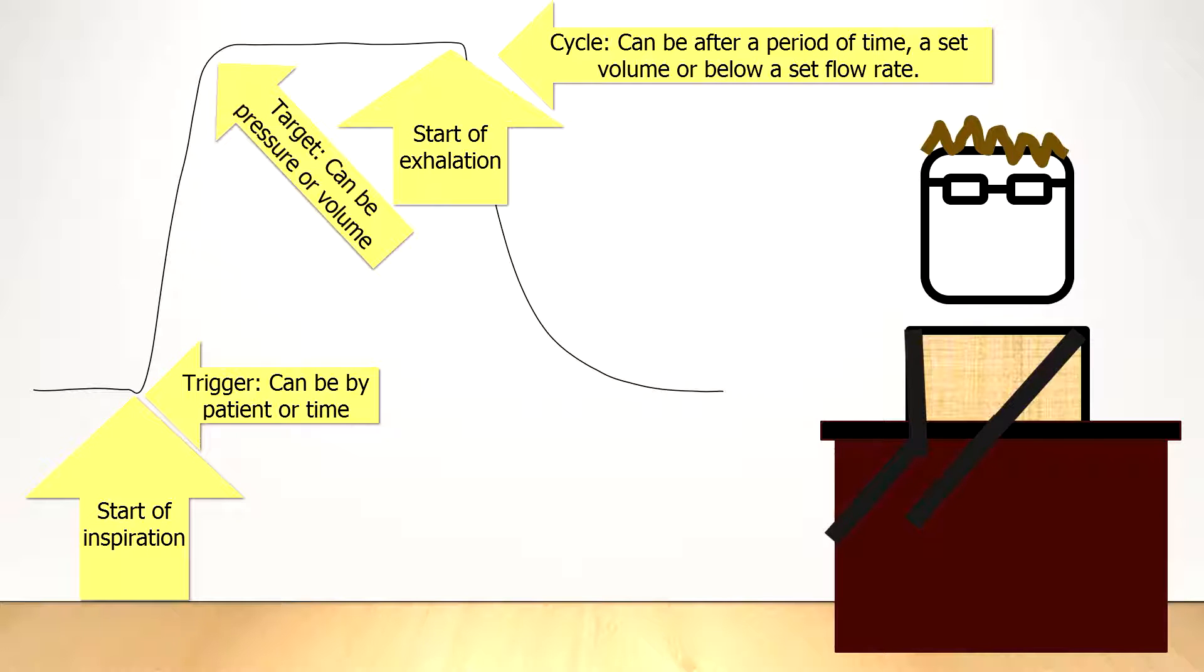If the patient is on a pressure support ventilation, which we'll discuss more about in a future talk, the ventilator will cycle once the flow rate is below 25% of the initial flow, as it is a marker to the ventilator when the patient has spontaneously stopped inhaling and wishes to start exhalation.